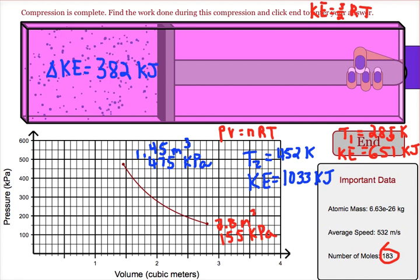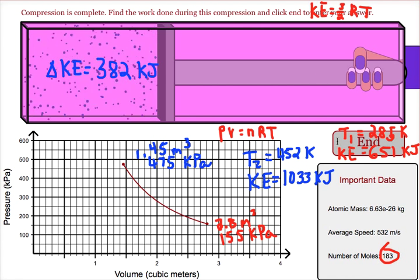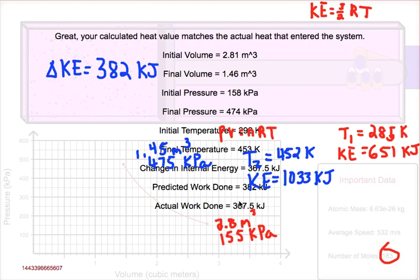To test our answer, we will click on the end button. We're just testing to make sure we know what we're doing. We click on the submit button, and you can see we did really well — we got really close to the actual value. Any errors were introduced in the estimation of pressure and volume.